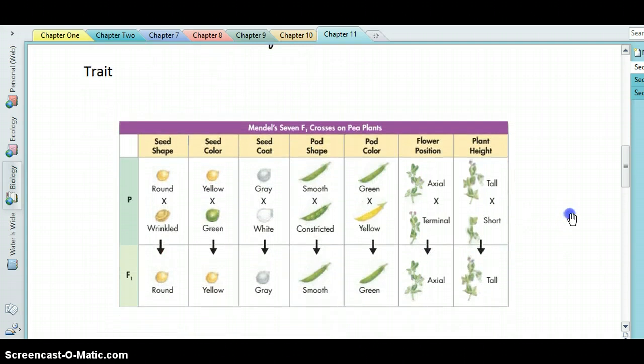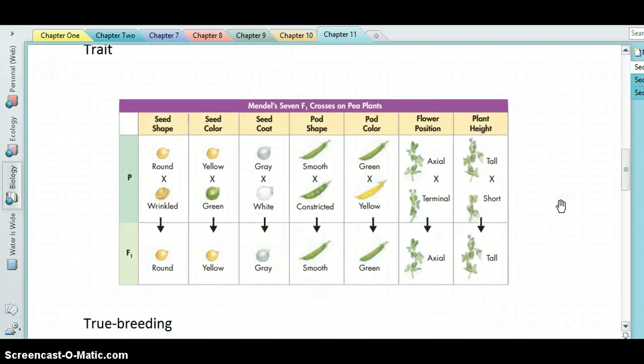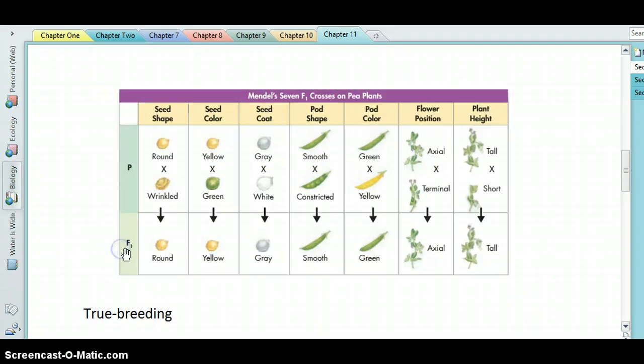So he was looking at these particular traits or characteristics of the pea plant. And again, they were all single gene traits. So there's a single gene that's responsible for the shape of the seed, another gene responsible for the color, another gene responsible for the color of the seed coat, and another gene responsible for pod shape, et cetera.